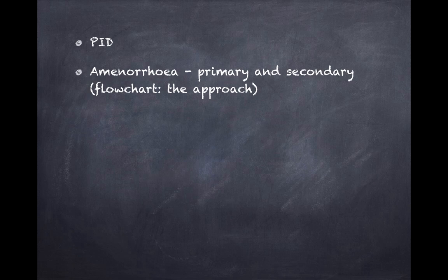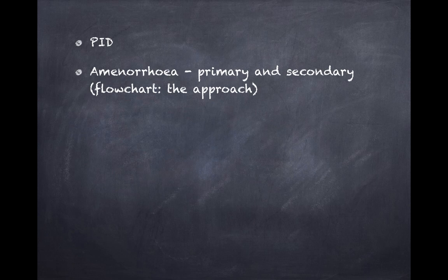Amenorrhea is a very logical and important topic. Approach it with a flowchart: once you segregate the patient as primary or secondary amenorrhea, work through the levels — the hymen, the uterus, the ovaries, the pituitary, and the hypothalamus. Dividing the pathologies level by level according to a flowchart makes this concept very simple, and it is high-yield.